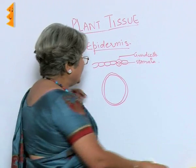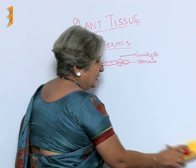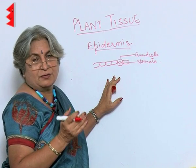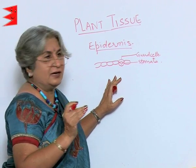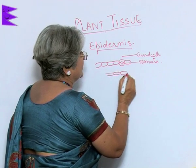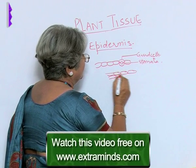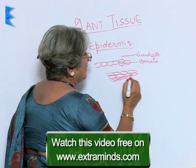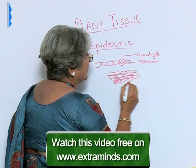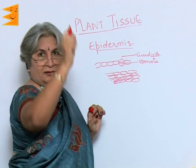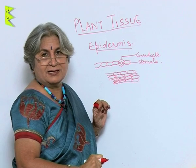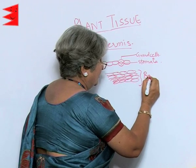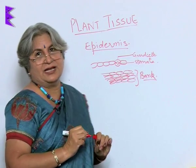In the case of stems, the epidermis is replaced by lateral meristematic tissue which keeps on dividing, and what we get is many layers of cells. If you look at trees, you will find a thick covering which can even be peeled off — that is the bark. So the bark has many layers of cells.